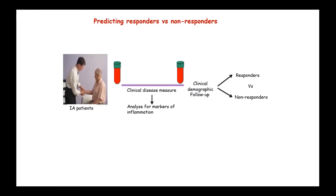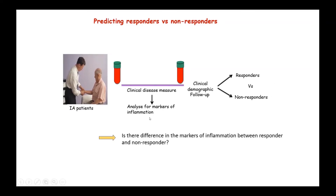One of our studies is focused on predicting responders to a therapy versus non-responders. We are recruiting inflammatory arthritis patients before they start a new treatment, collecting blood, and analyzing it for different markers of inflammation. We then collect samples again once the patient starts a new treatment and stratify patients between responders and non-responders. We want to understand whether there is a difference in markers of inflammation between the two groups, and whether lifestyle could influence the response to a specific therapy.